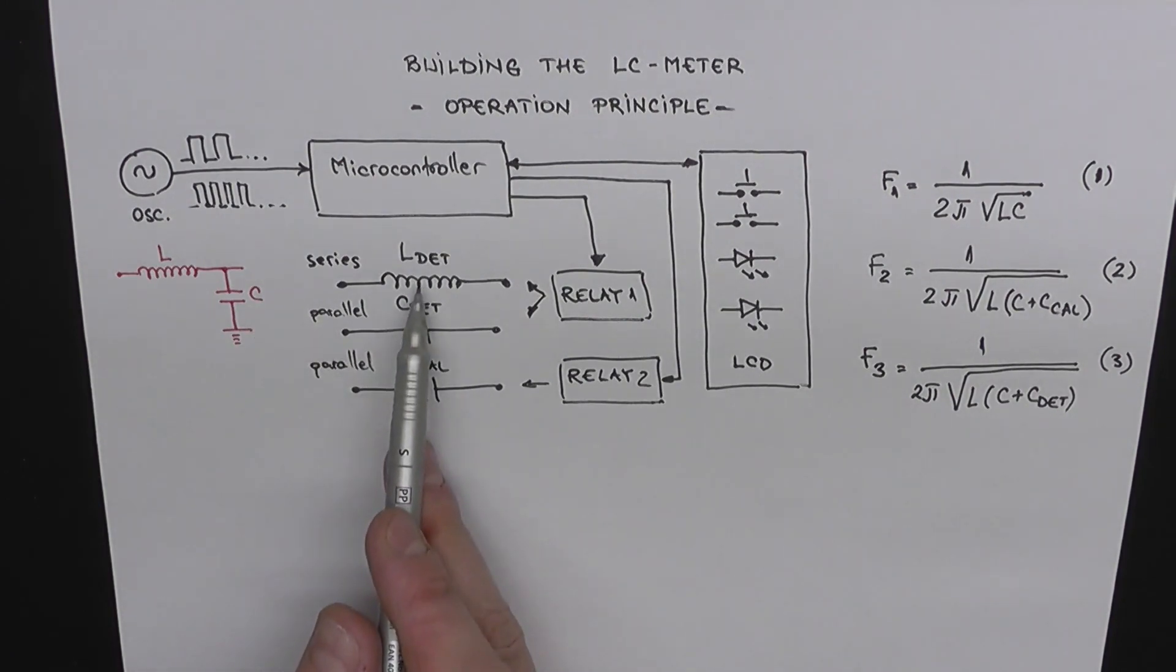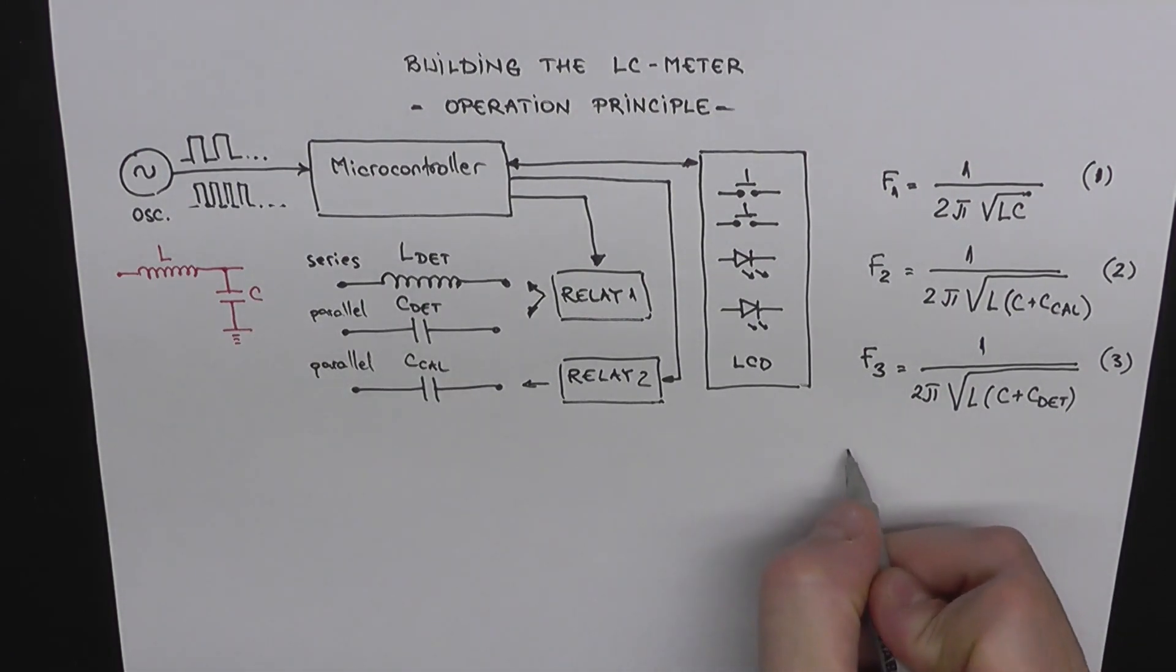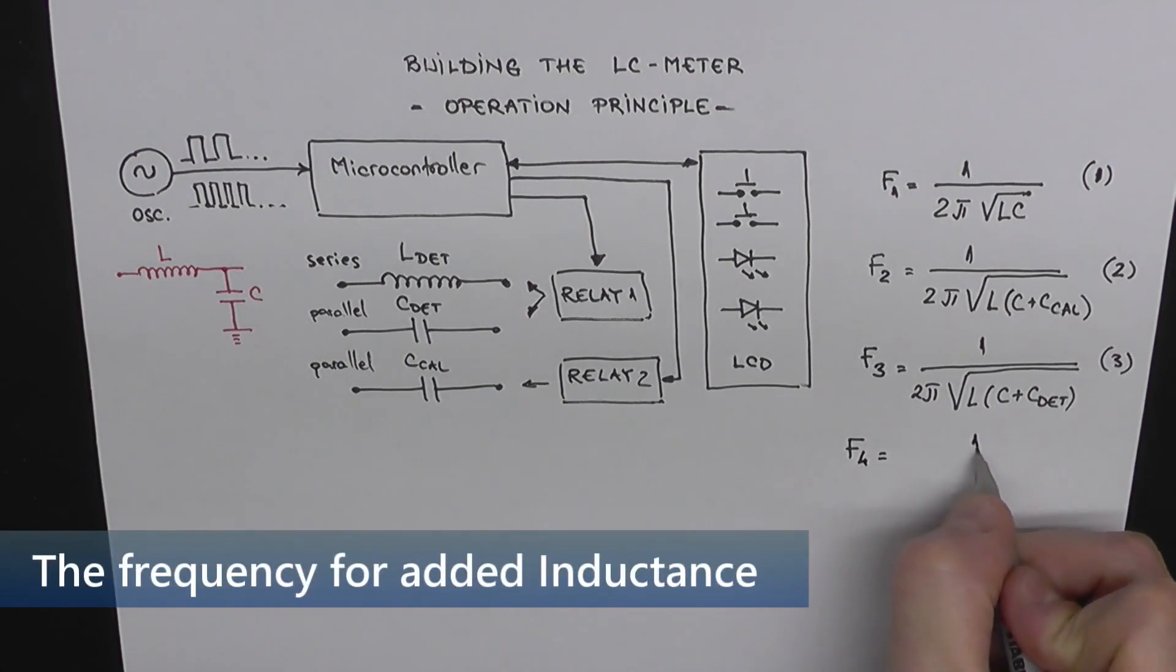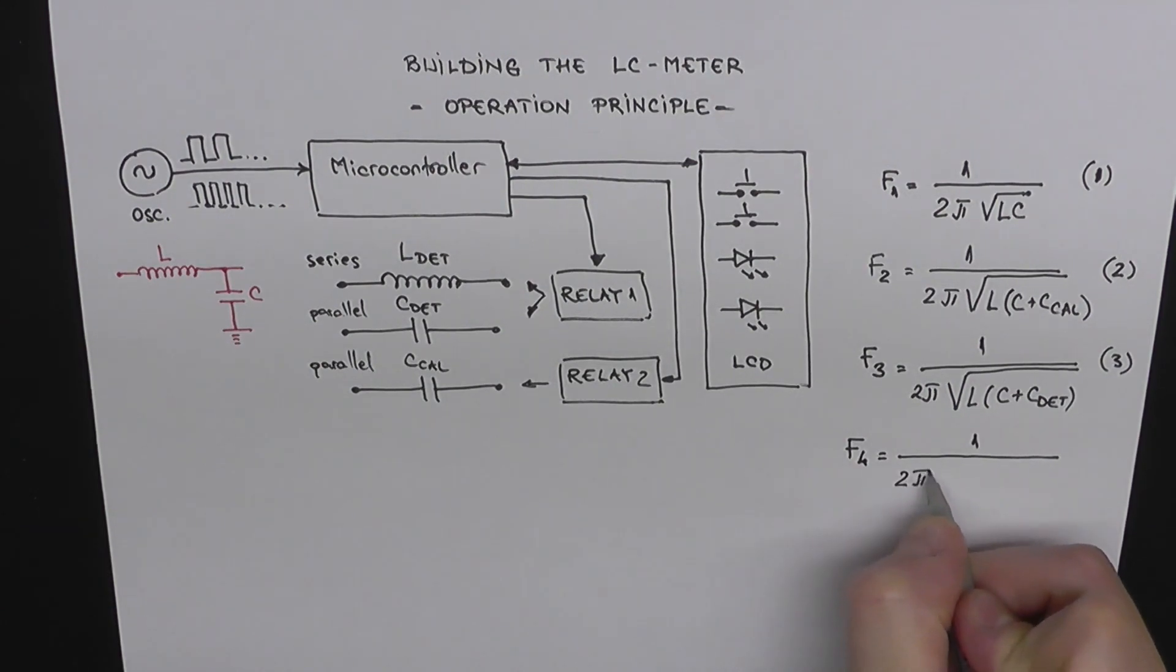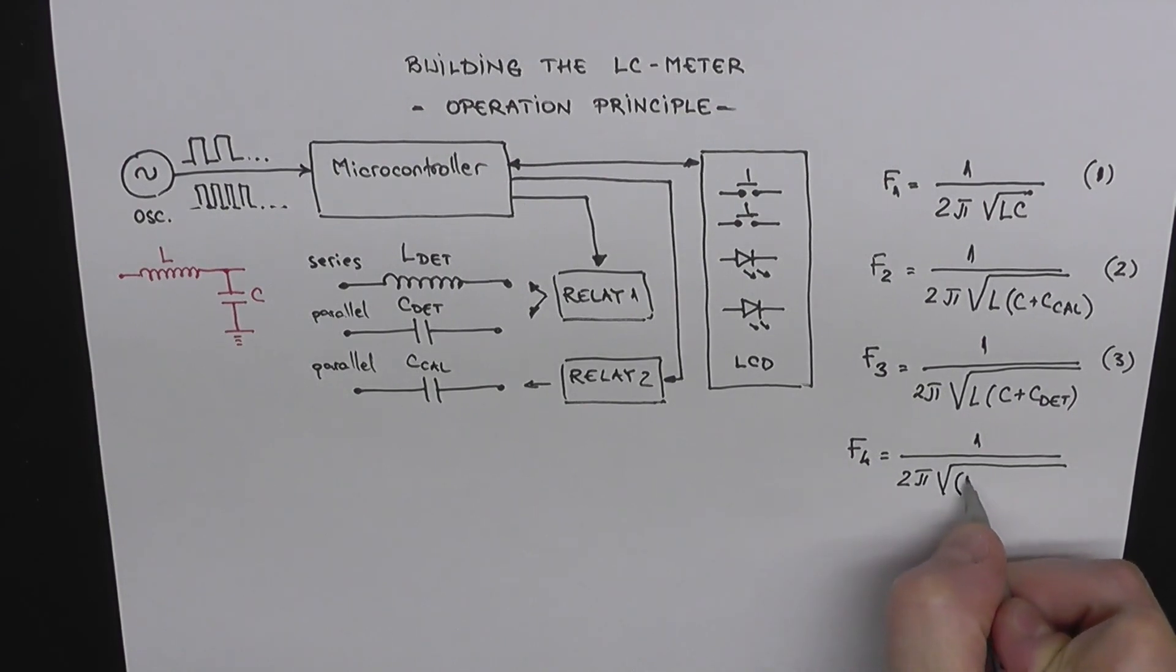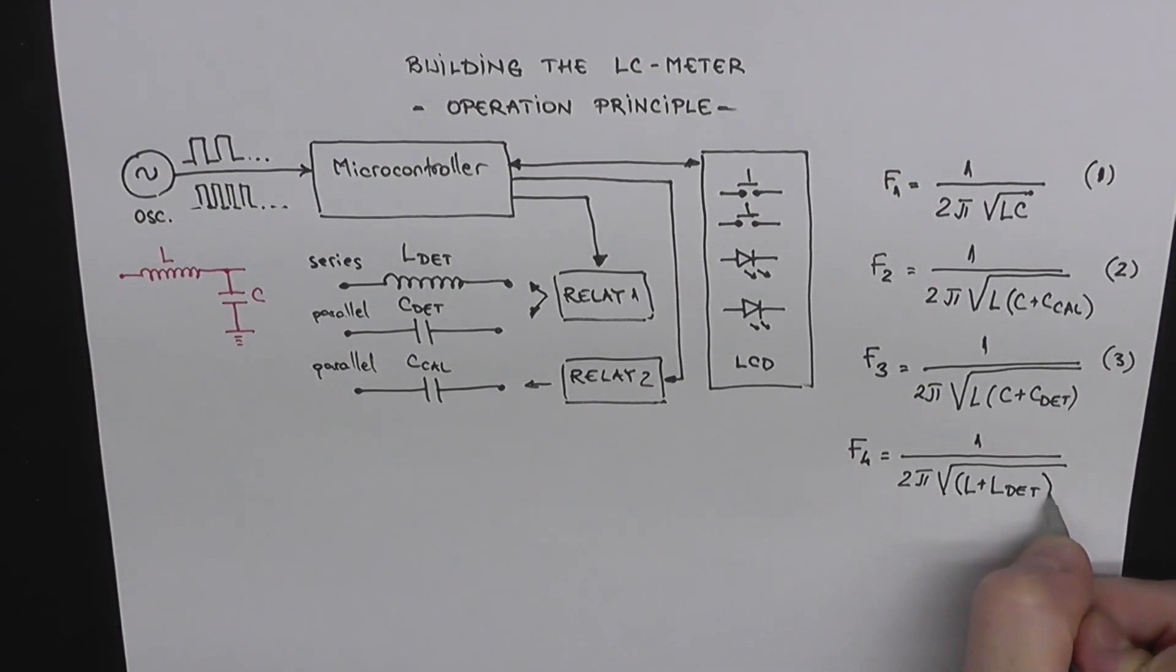If we want to measure an inductance, we switch relay 1 to add L to determine in series to L, and we can write F4 equals 1 over 2π square root from L plus L to determine multiplied with C. Equation number 4.